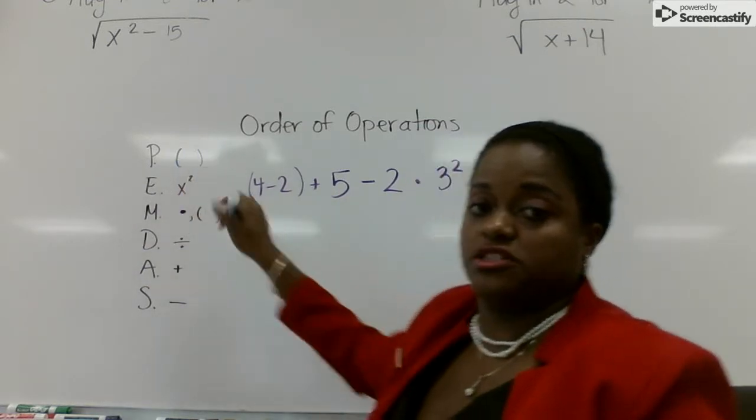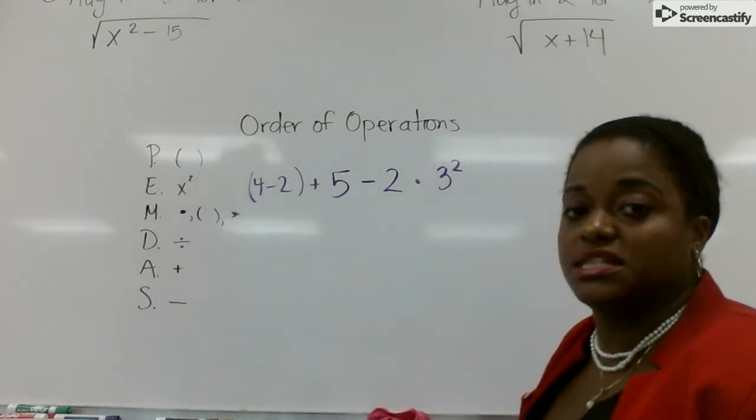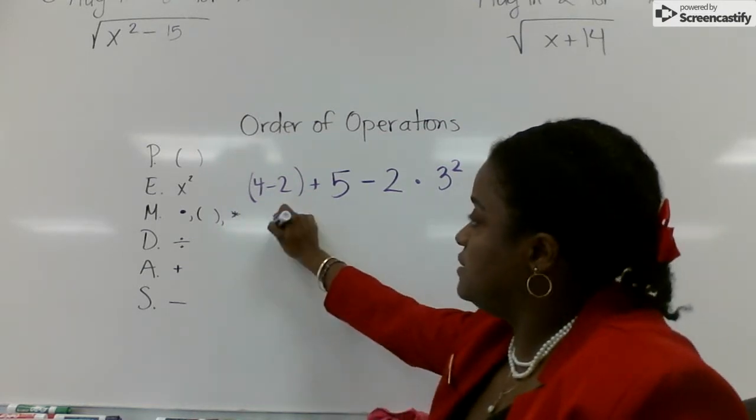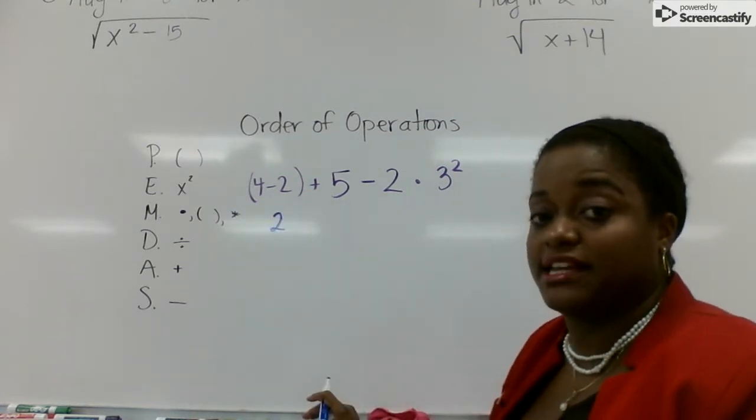So we start with this first. So here's our problem, and we want to do what's in the parentheses first. 4 minus 2 is in the parentheses. That is 2. Leave everything else the same.